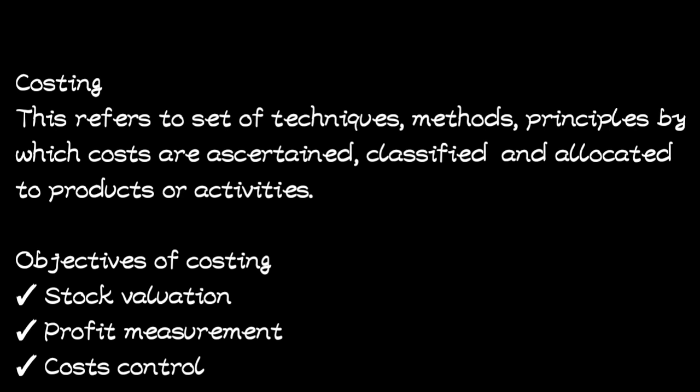The objectives of costing — why costing is done. First, it is stock valuation. Second is profit measurement, to know how much you're spending and how much you're earning so you can determine how much profit you're making. Third is cost control, so that you can know where costs are high and find ways of cutting those costs. Those are the three objectives of costing: stock valuation, profit measurement, and cost control.